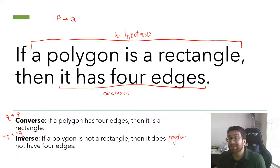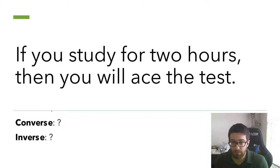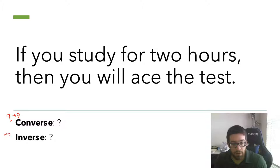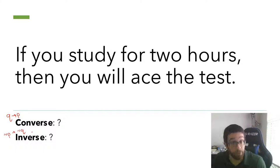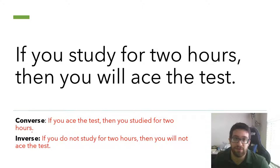Now try this with a different statement: if you study for two hours, then you will ace the test. We're asking for the inverse and the converse. Remember the converse is Q implies P, and the inverse is not-P implies not-Q. Pause the video and give that a try. The converse is: if you ace the test, then you studied for two hours. The inverse is: if you do not study for two hours, then you will not ace the test.